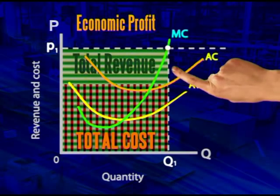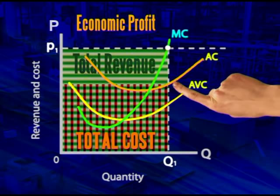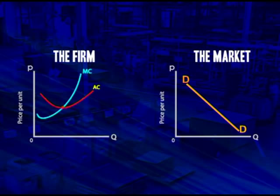Sooner or later, other entrepreneurs will see that there is good money to be made in this business and will enter the market. And, as you might remember from demand and supply, one of the non-price factors that will cause a shift of the market supply curve to the right is an increase in the number of firms.